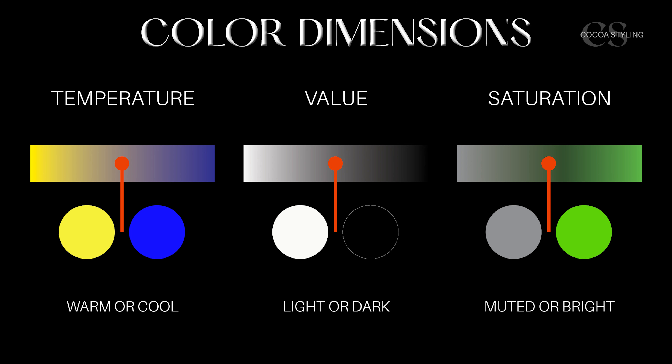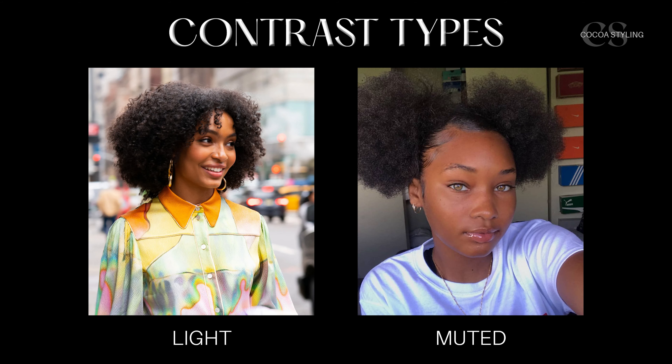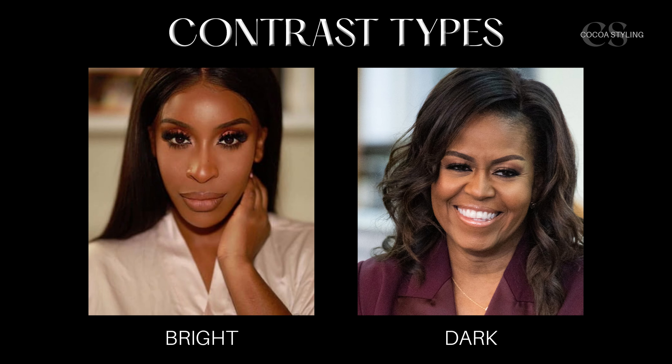All seasons have three color dimensions: temperature, value, and saturation. Clear springs and dark autumns are both warm seasons and they also have a high contrast level. When we talk about contrast types we have light and dark, and then we have muted and bright. For the low contrast types we have the muted or soft types and the light types — those would be light spring, light summer, soft summer, and soft autumn. The high contrast types are clear types and dark types: clear springs, clear winters, dark autumns, and dark winters.